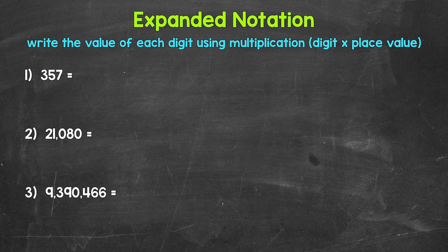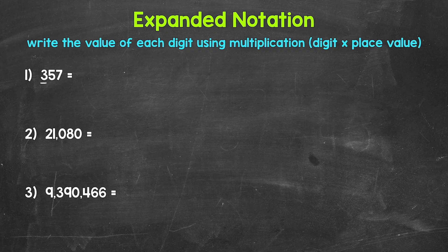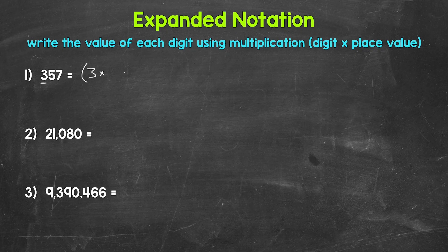To start writing a number in expanded notation, we start with the digit furthest to the left and we work our way right. So for number 1, we start with this 3 right here. Well, what's the value of this 3? For expanded notation, we show this value by taking the digit and starting our parentheses, which we use to group our digits and place values — the parentheses help keep things organized. Then we have our digit 3, and we multiply that digit by its place value. The 3 is in the hundreds place, so we multiply by 100.